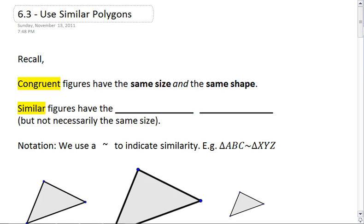Recall, we've talked about congruent figures before, and the two conditions for a congruent figure is that the figure has to have the same size and the same shape.